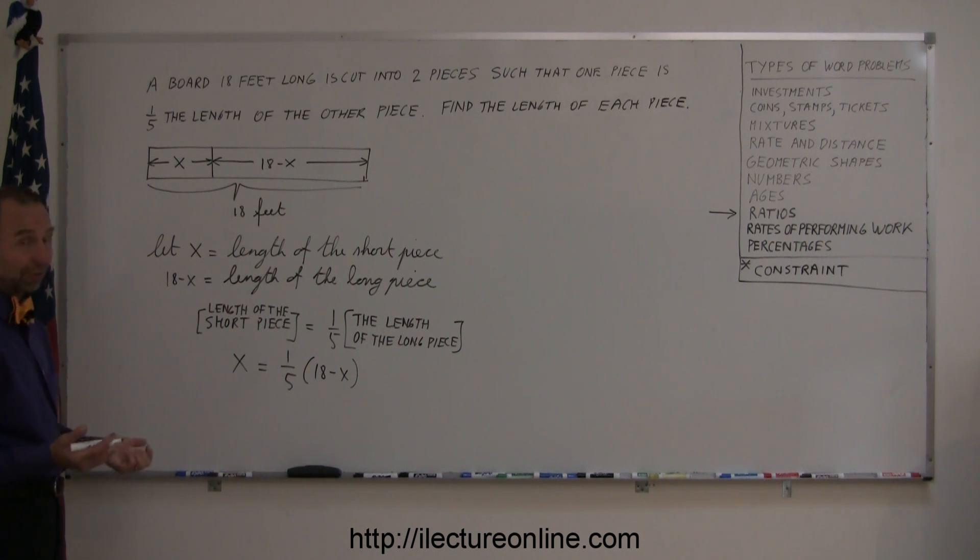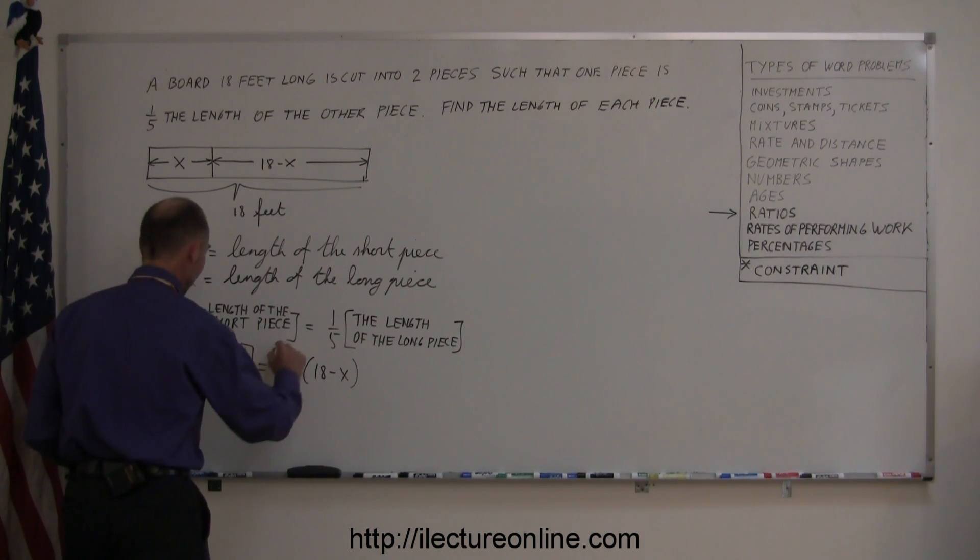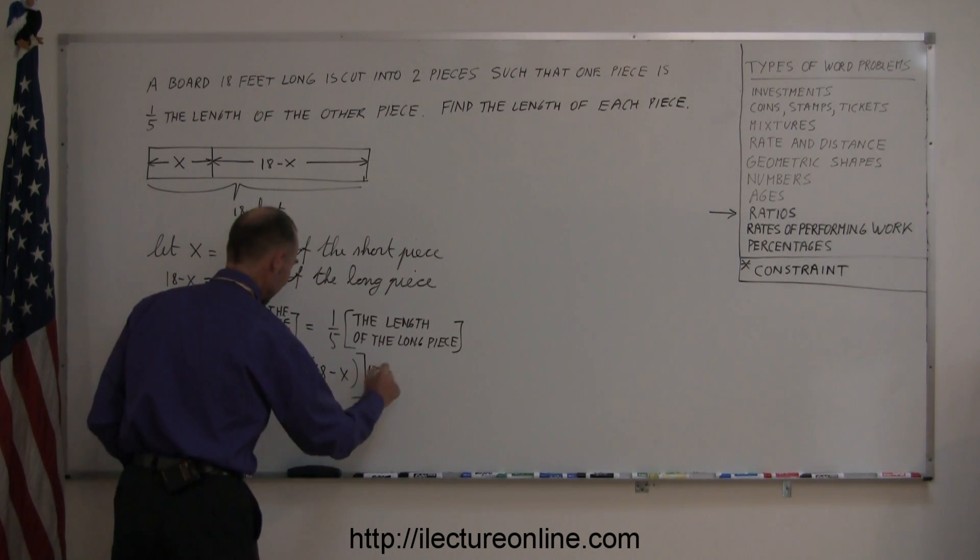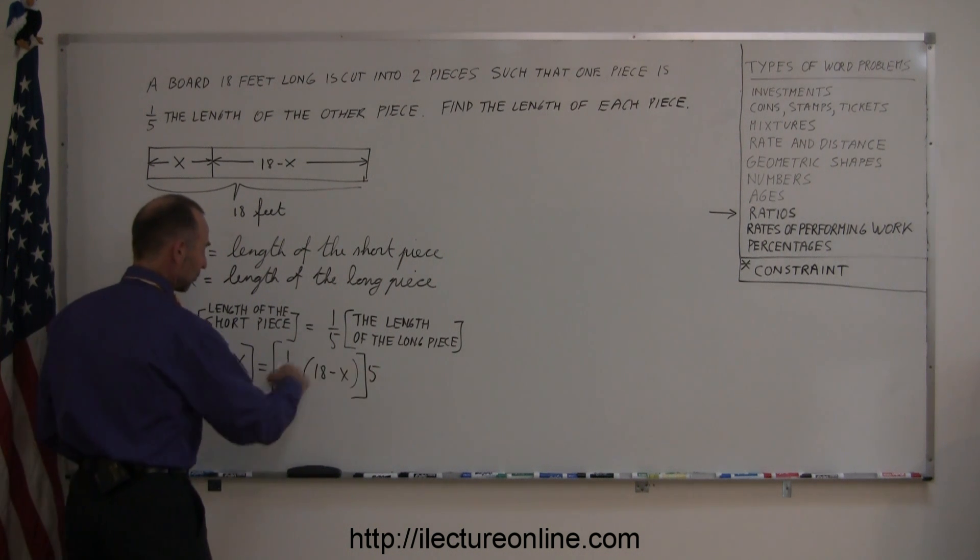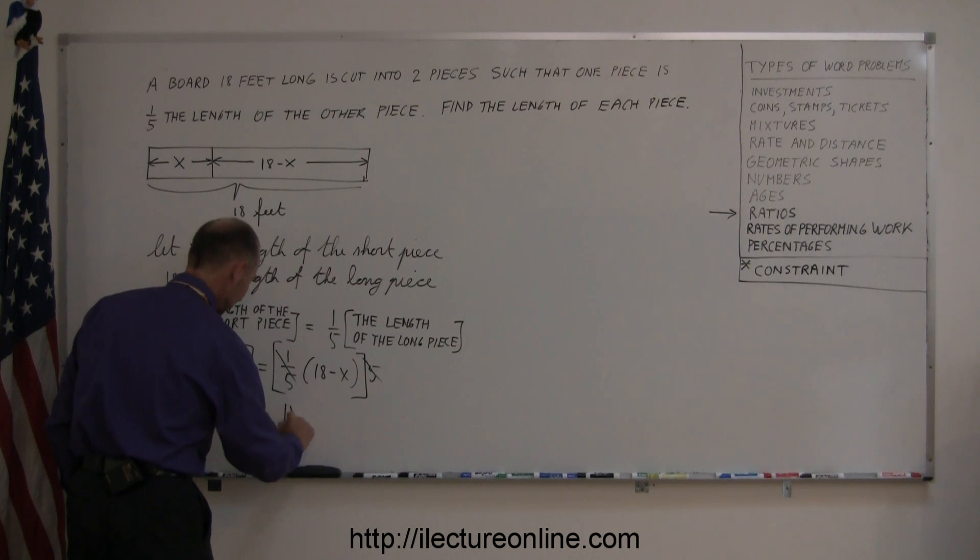First thing you want to do is get rid of the fractions, so that means we're going to multiply both sides of the equation by five. So five times x gives me 5x. Five times one-fifth, that cancels out, so I'm left with 18 minus x.